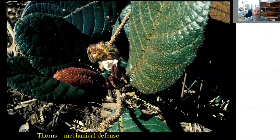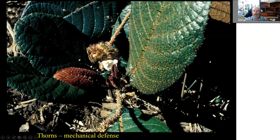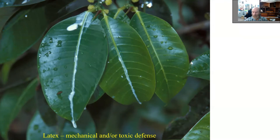Other defenses are mechanical - working especially against vertebrate herbivores. Young leaves are especially valuable and worth protecting, and the density of spines on young leaves can be extraordinary. As the leaf expands, the spines stay in place and get farther from one another. Latex is a combination of mechanical and toxic defense - it often contains poisonous secondary metabolites, and it also solidifies on contact with air, working like glue and gumming up insect mandibles. We use latex as natural rubber - it also originally evolved as defense against herbivores.